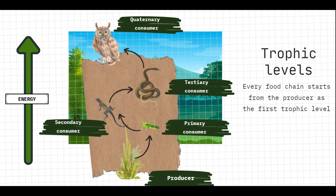Every food chain starts from the producers as the first trophic level. The trophic levels in the food chain are: producers, then primary consumers, secondary consumers, tertiary consumers, and then quaternary consumers. Energy is transferred from one trophic level to another, and the arrows show where energy is coming from and where it is going.